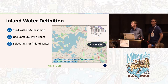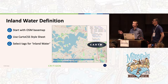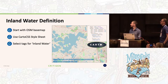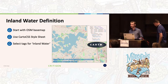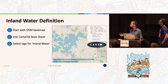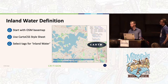To start, what are we calling water? We wanted to do something very OSM-based, so we literally started with the OSM base map and asked: what's blue on here? We found that this is based on Carto style sheets that map tags associated with features to the styling you see on the map. We went with the water style sheet and selected a number of tags to create what we call our inland water definition.